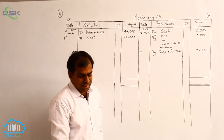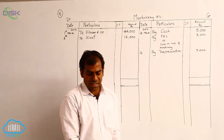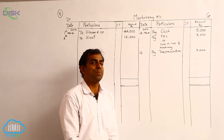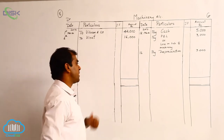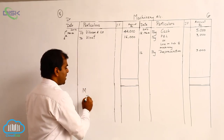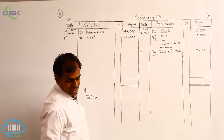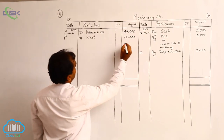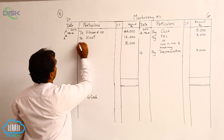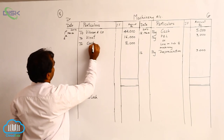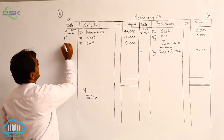On 30th March, machinery was purchased for cash. This transaction affects the machinery account, so the journal entry is: Machinery Account debit to Cash Account. We record ₹8,000 on the debit side of the machinery account, with the reason 'cash' and date 30th.